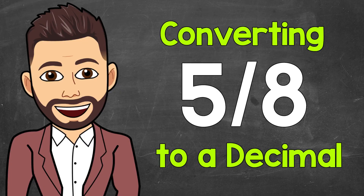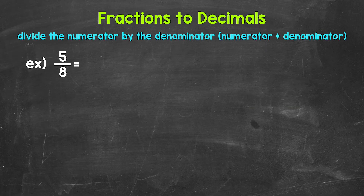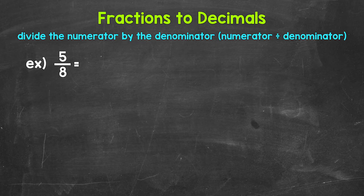Welcome to Math with Mr. J. In this video, I'm going to cover how to convert 5 eighths to a decimal. When we convert a fraction to a decimal, we can do this by dividing the numerator, the top number of the fraction, by the denominator, the bottom number of the fraction.